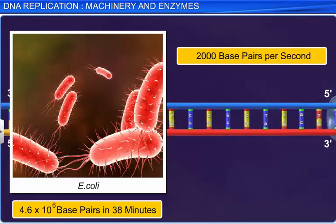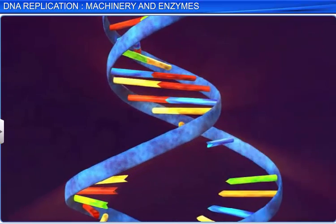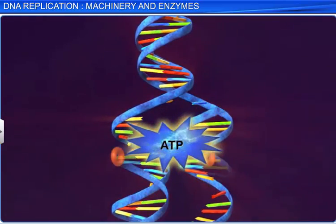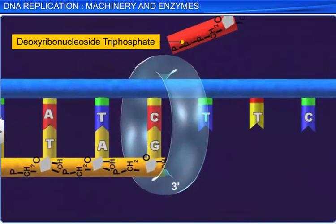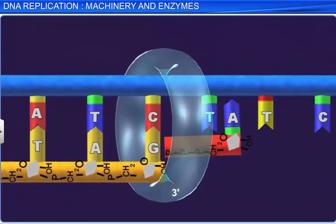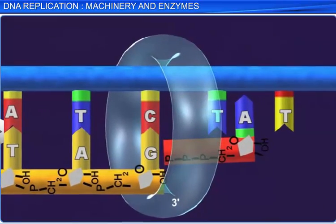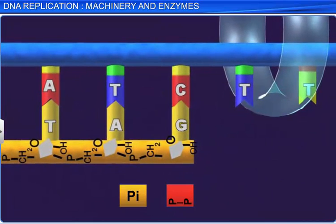The replication process is also an expensive process in the sense that it requires expenditure of energy. The deoxyribonucleoside triphosphates that act as substrates also serve as the energy source for the reaction. The terminal phosphates in the deoxyribonucleoside triphosphates break down to provide energy as ATP.